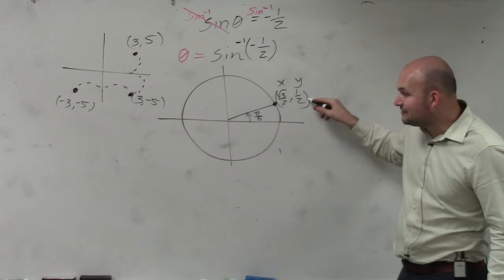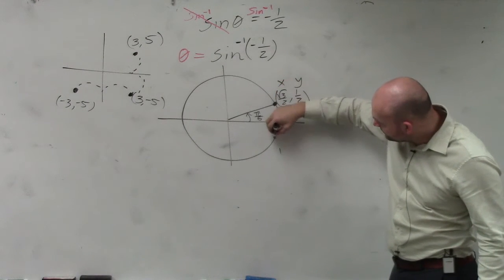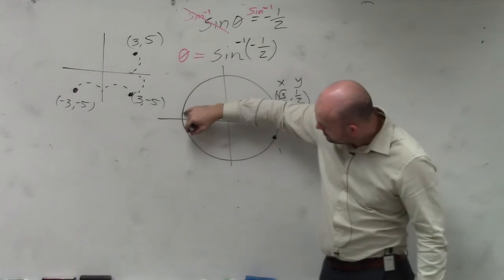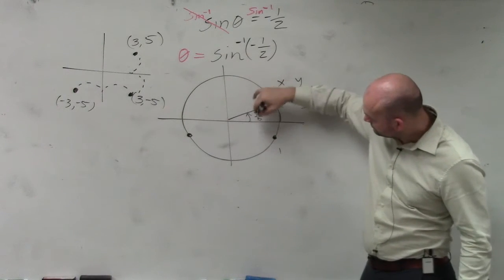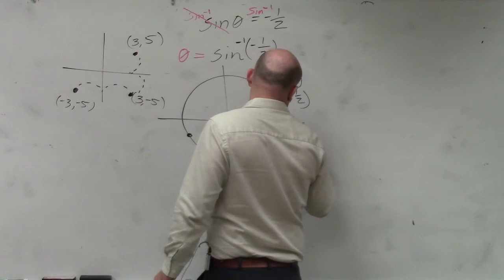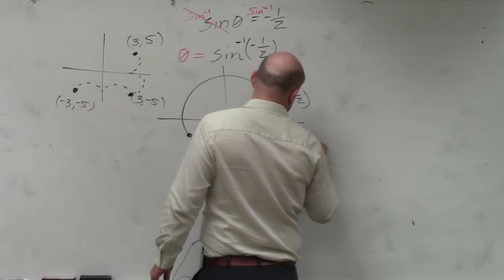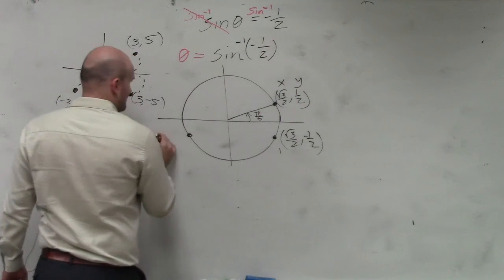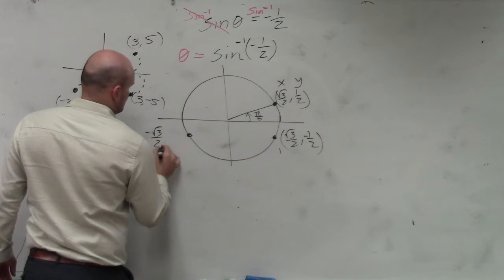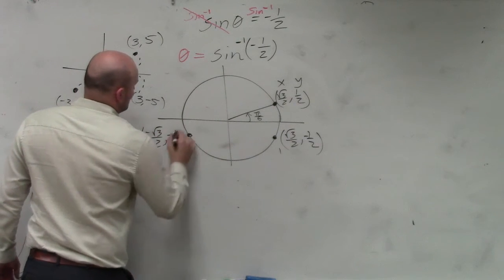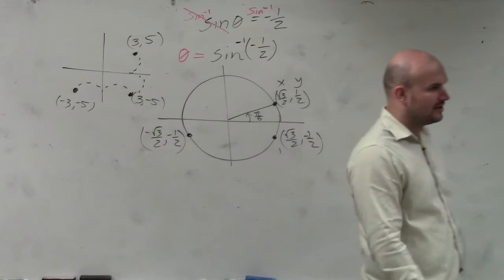When this is going to be negative 1 half, it's going to be this angle and this angle. Do you guys agree with me? Now, the problem is, we just need to figure out, well, what the heck are these two angles?